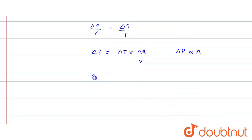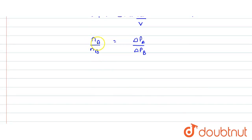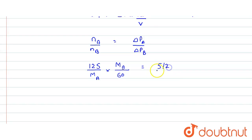Therefore, nA/nB = ΔPA/ΔPB. Writing moles as mass divided by molecular mass: (125/MA) divided by (60/MB) equals ΔPA/ΔPB. The rise in pressure in A is 2.5 (or 5/2) and in B is 1.5 (or 3/2), so the ratio ΔPA/ΔPB = (5/2)/(3/2) = 5/3.